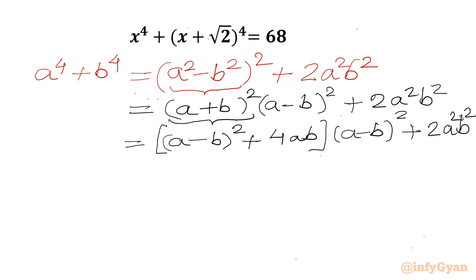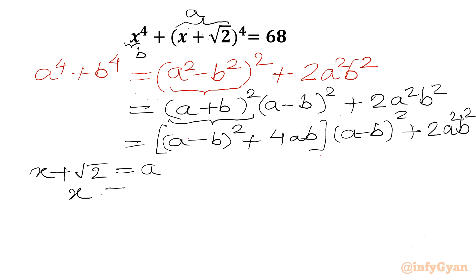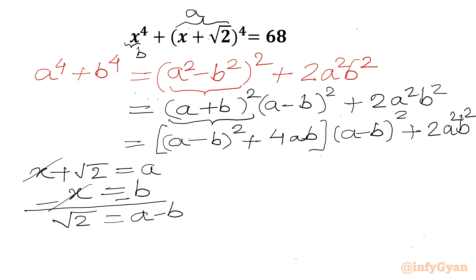Now I will use substitutions. Let a = x + √2 and b = x. Subtracting the second equation from the first, x cancels out, leaving √2 = a - b. Squaring both sides gives (a - b)² = 2.